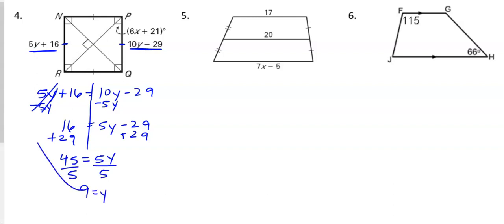Now that we have that, let's substitute it back in. So over on the left, we have 5 times 9, which is 45. And 45 plus 16 is going to be 61. And then on the right side, we have 10 times 9 is 90. And 90 minus 29 is also 61. So that's good. That means that all of our sides are 61 because it's a square.